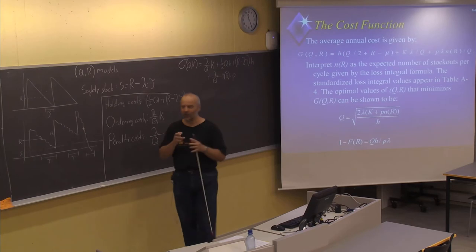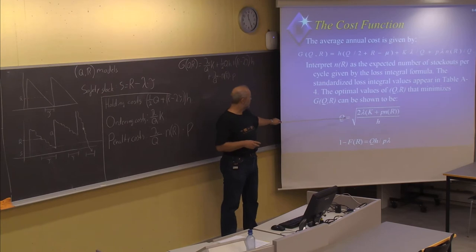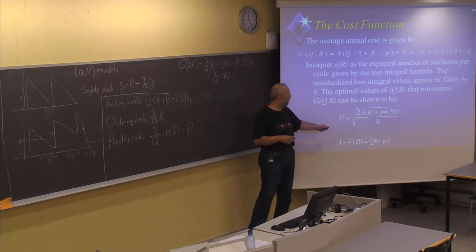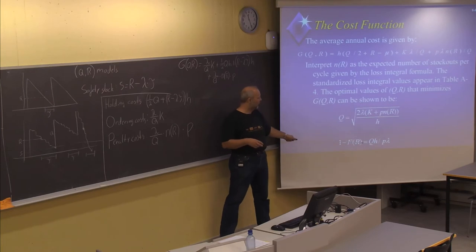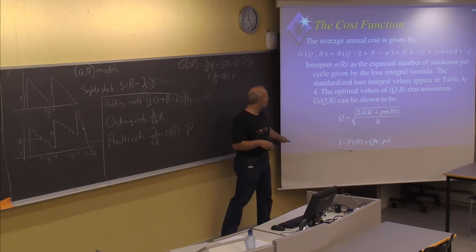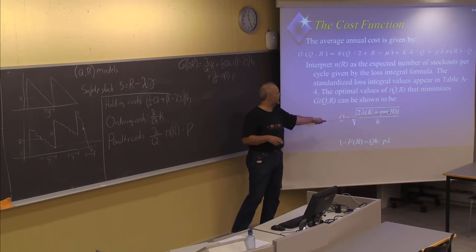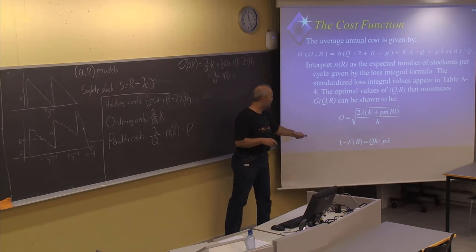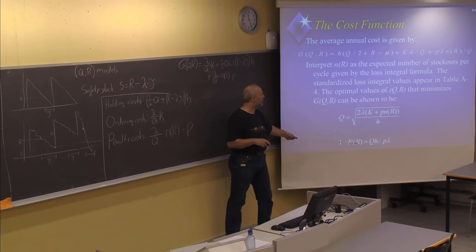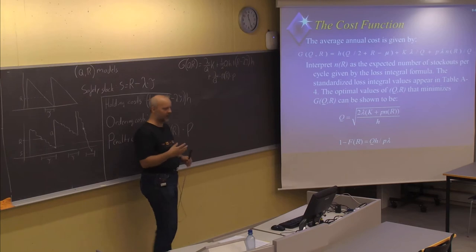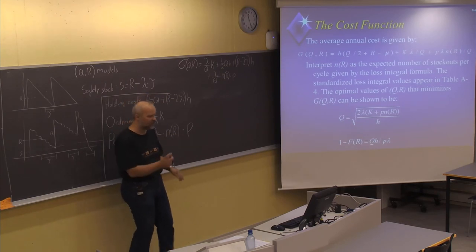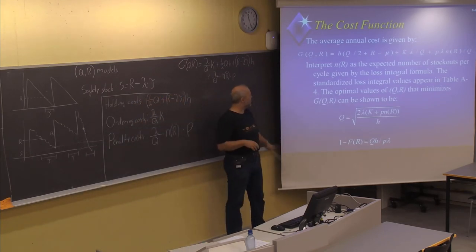To find the optimal combination of the two parameters, we need to start with a value of Q — usually the EOQ value — use that to solve for R and find an estimate for the reorder point. Then use that reorder point to find the expected number of units short and update Q. Use the updated Q to find an updated R, and so on. Continue solving these two expressions every other time until they stabilize and give the same result in two iterations in a row, at which point we have the optimal combination of Q and R.